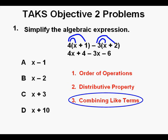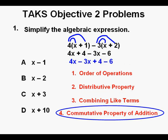Next, we need to further simplify by combining like terms. What kinds of terms do we have? We have x's, 4x and minus 3x, and we have numbers, 4 and minus 6. We can put the x's and numbers in any order we want because of the commutative property of addition. When adding, the order does not matter.